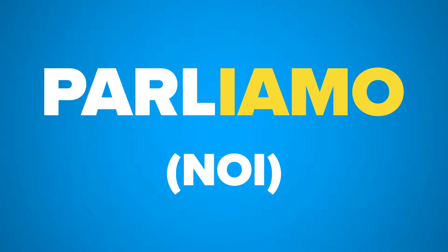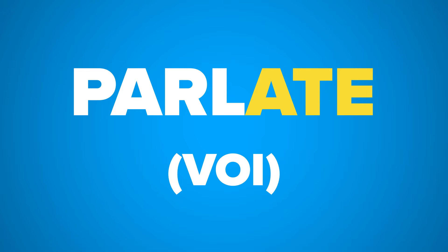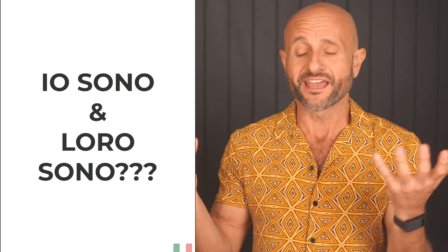I got used to the idea that every verb is conjugated differently so that it's unique to the subject. For example, parliamo can only mean 'we speak,' parla can only mean 'he or she speaks,' parlate is only 'you guys speak.' That's why Italian is great - you can avoid confusion without needing the subject. But now I'm confused because io sono and loro sono share the same form.